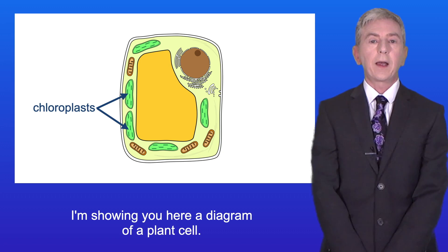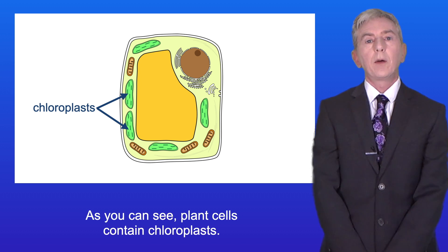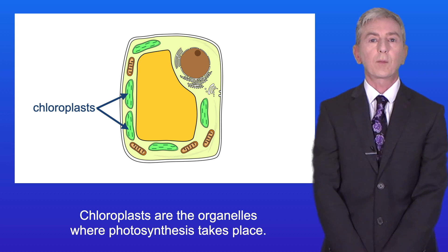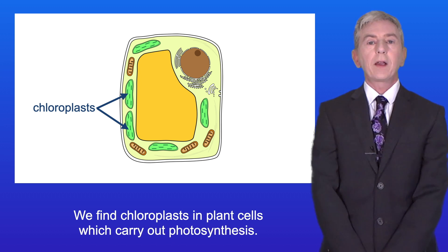I'm showing you here a diagram of a plant cell. As you can see, plant cells contain chloroplasts, and chloroplasts are the organelles where photosynthesis takes place. So we find chloroplasts in plant cells which carry out photosynthesis.